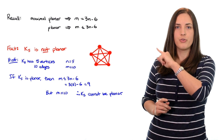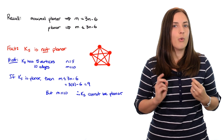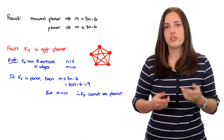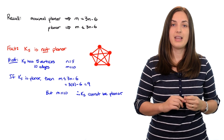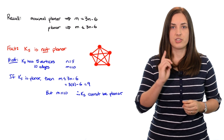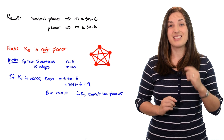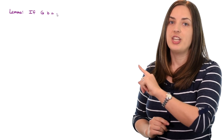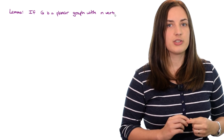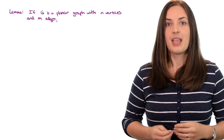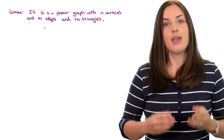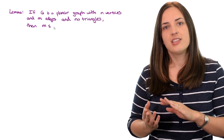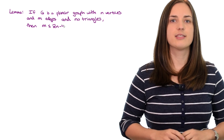Now we want to see if we can do something similar to prove that K3,3 is also not planar. We're going to derive a similar bound on the number of edges given an additional condition on the graph. The lemma we want to prove is: if G is a planar graph with n vertices and m edges and has no triangles, then the number of edges is at most two times n minus four.